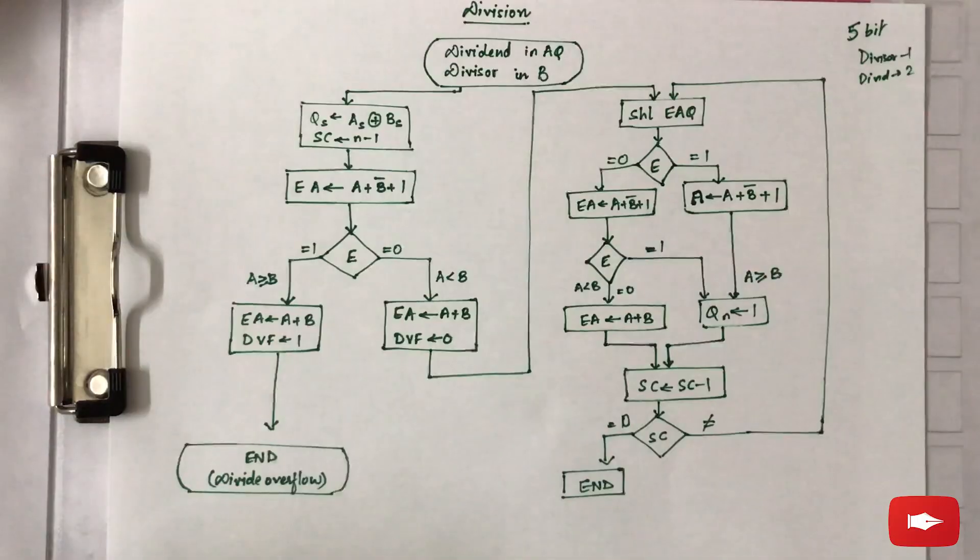So we need to firstly check whether the first bits of the dividend are greater than divisor, because that will result into a divide overflow condition and it has to be handled separately. If not, we will continue with the division process.